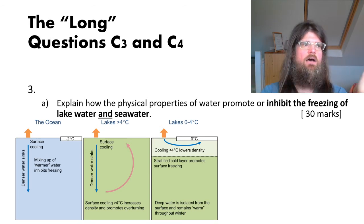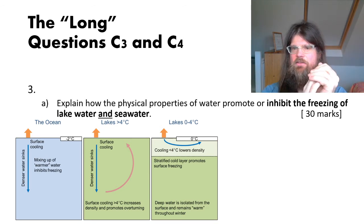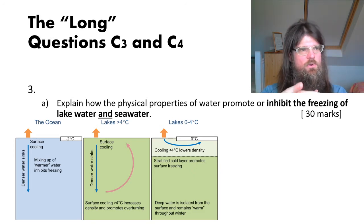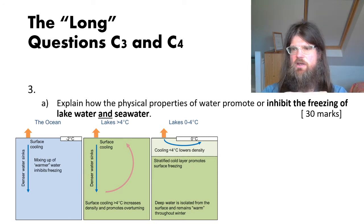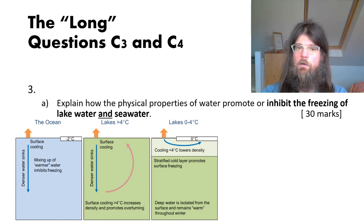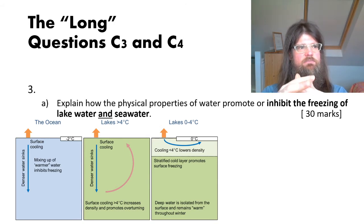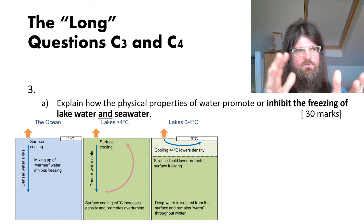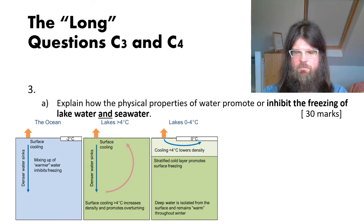The first part of question three: explain how the physical properties of water promote or inhibit the freezing of lake water and seawater. There are a number of things that could go into this answer. You could split it into how freezing in lakes and seawater happens, and then explain how the physical properties of seawater are responsible for that process — helping or hindering it. The images used here are all about changes in density as water is cooled.